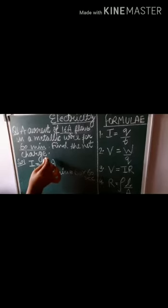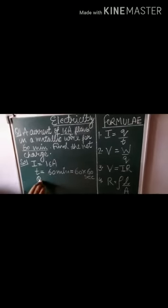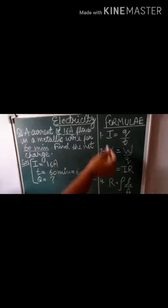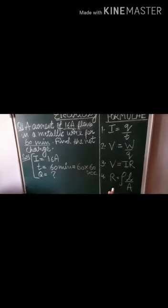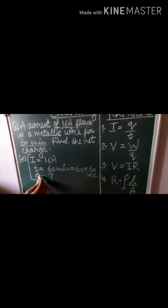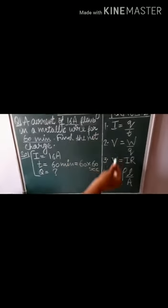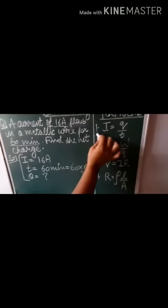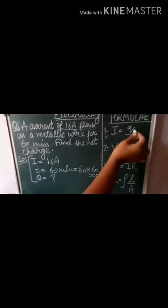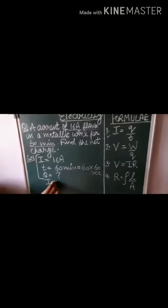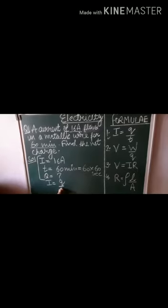Find the net charge. Now we have to find charge. You have to check from the right side which formula we will use. See, the given terms are I, T, and Q. So which relation will you follow? As given here in the first, we will take the first formula: I, Q, T. It is a relation between these three quantities. So we will take I is equal to Q by T.